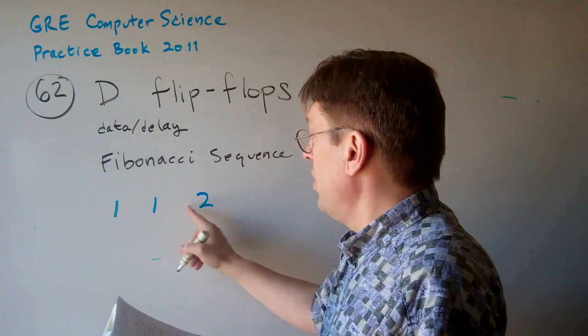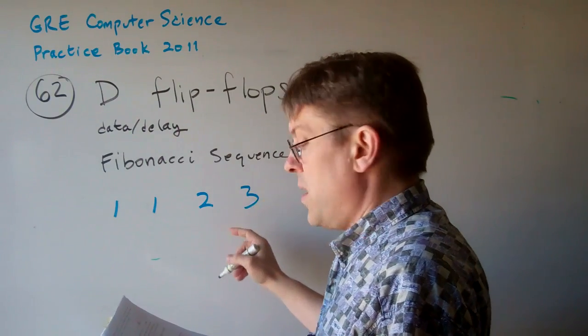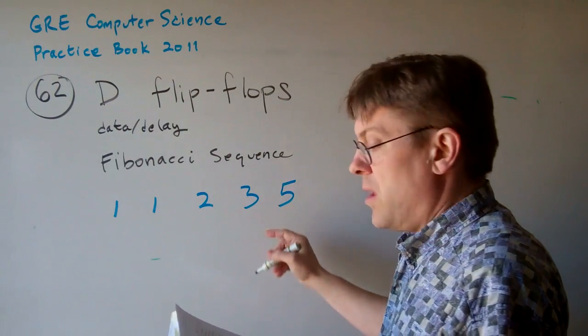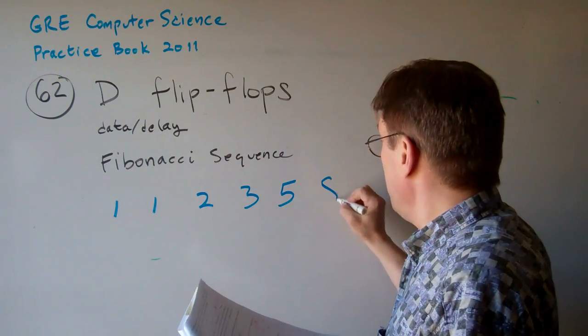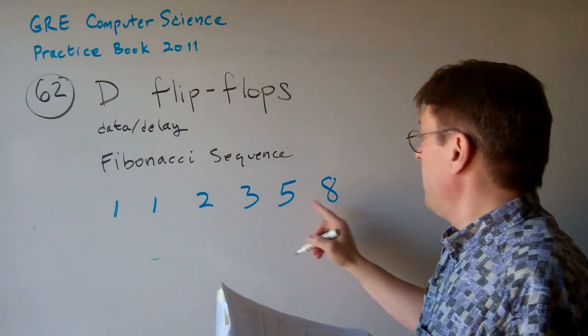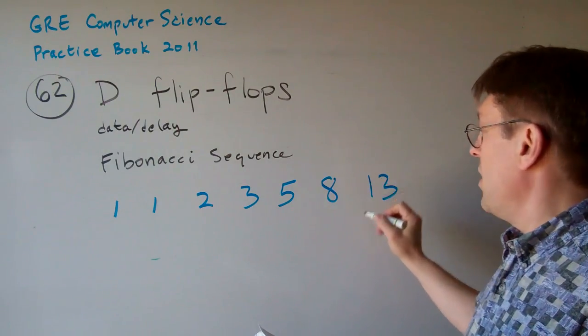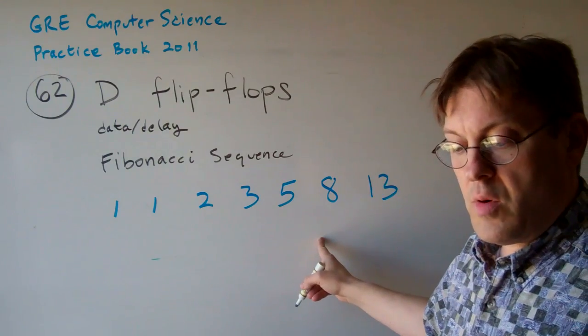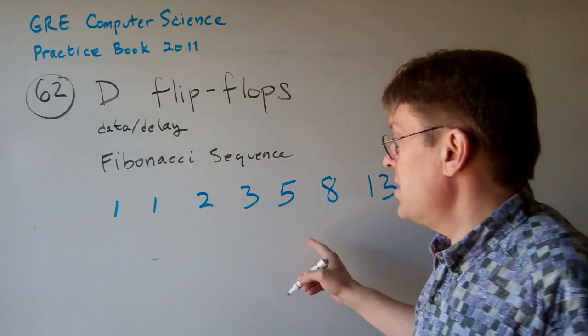The next one is 2 plus 1, which is 3. The next one is 2 plus 3, which is 5. Then 5 plus 3, which is 8, and then we have 5 plus 8, which is 13. So these are the first seven numbers of the Fibonacci sequence.